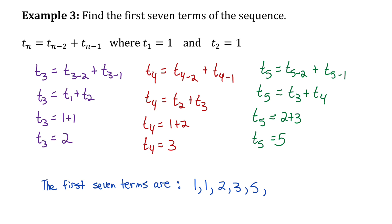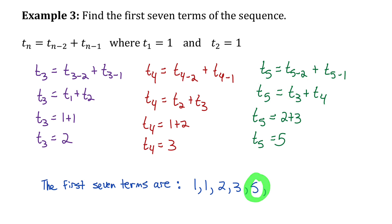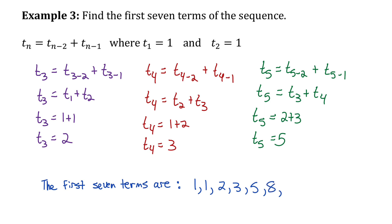I need to write two more terms. Remember, the formula says to find any term we add the two previous terms. So for the sixth term, three plus five is eight. And then for the seventh term, five plus eight is 13. This sequence of numbers is called the Fibonacci sequence, which has lots of amazing patterns. I introduced a few back in lesson 1, and stay tuned — I plan on posting a top 10 video revealing the most interesting patterns in this sequence.